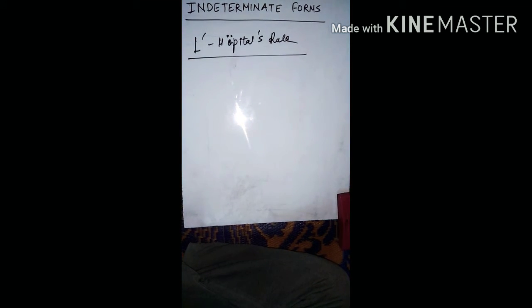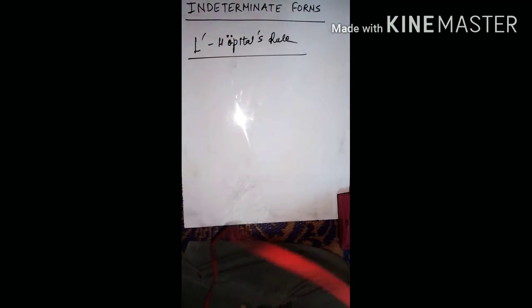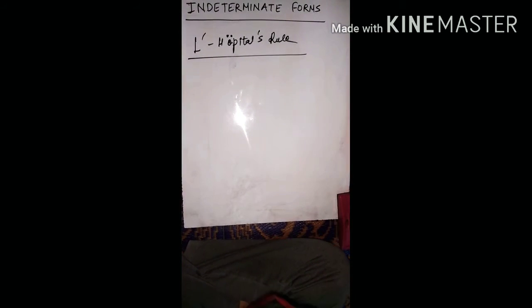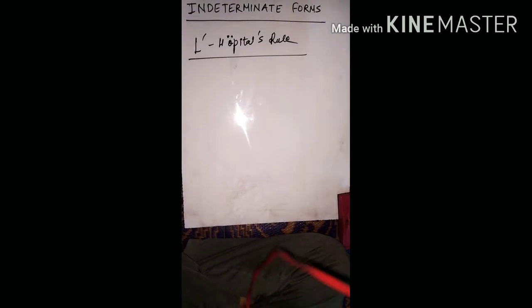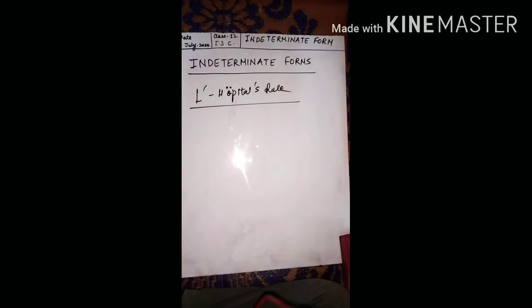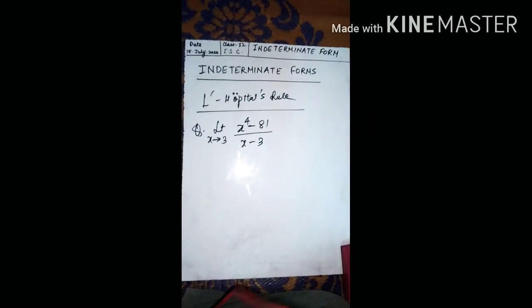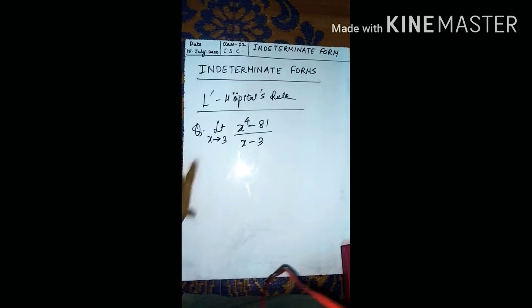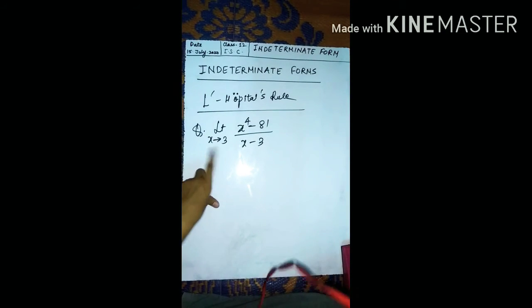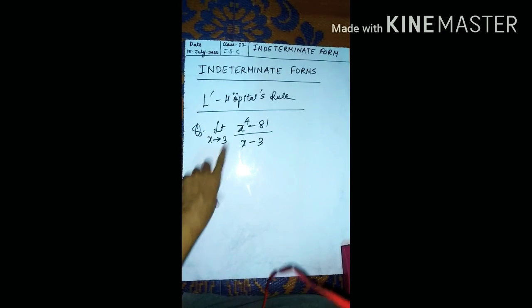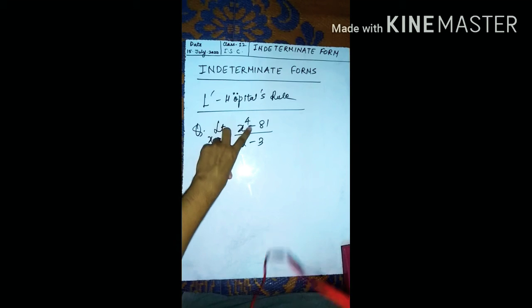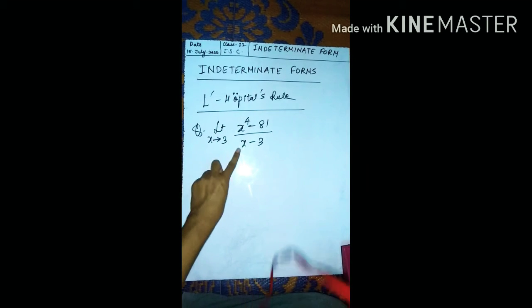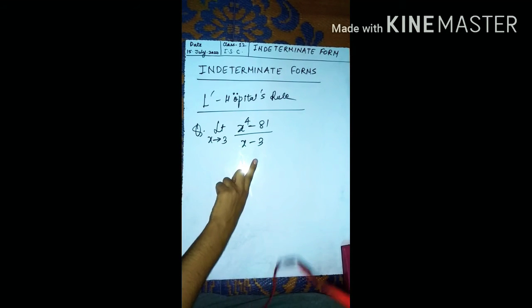What is L'Hôpital's rule and how do we use it? Let us take a direct question: limit x tends to 3 of x to the power 4 minus 81 upon x minus 3.